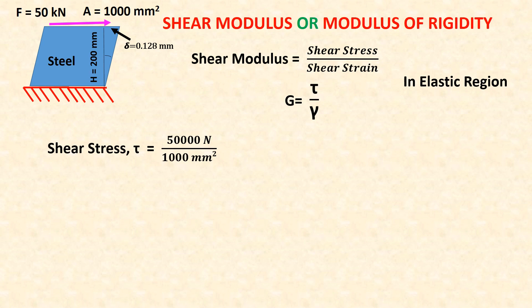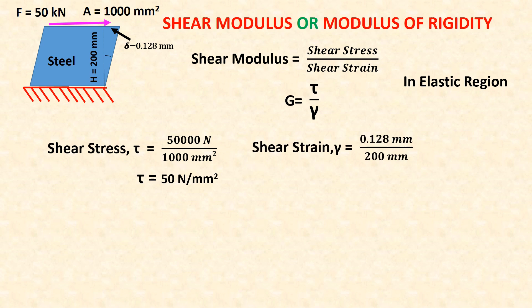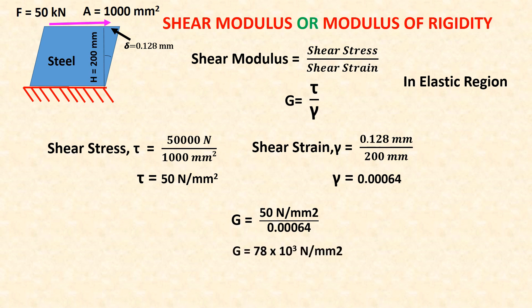Example: shear stress tau equals 50,000 N (i.e., 50 kN) over 1000 mm², so tau equals 50 N/mm² (50 MPa). Shear strain gamma equals 0.128 over 200, so gamma equals 0.00064. Therefore, shear modulus G equals 78 GPa.